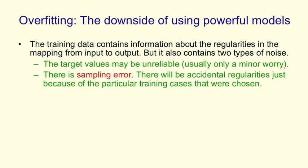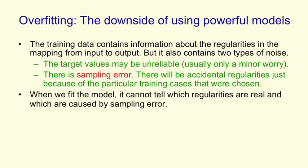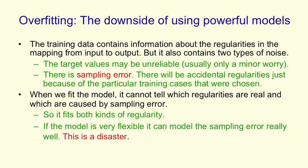And however carefully you choose examples, for any finite set of examples, there'll be accidental regularities. Now when we fit a model, there's no way it can tell the difference between an accidental regularity that's just there because of the particular samples we chose and a real regularity that will generalize properly to new cases. So what the model will do is it'll fit both kinds of regularity. And if you've got a big powerful model, it'll be very good at fitting the sampling error. And that'll be a real disaster. That'll cause it to generalize really badly.